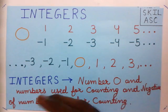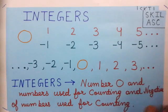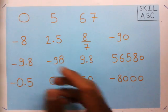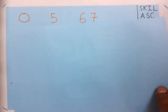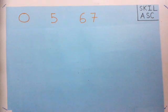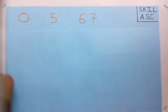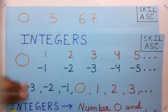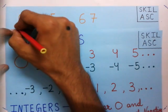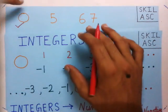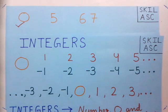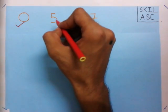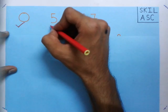Now we will take a few examples to check whether numbers are integers or not. The first number is 0. We have 0 in our list and all numbers in that list are integers, so 0 is also an integer. Next, 5 is used for counting, so 5 is also an integer.